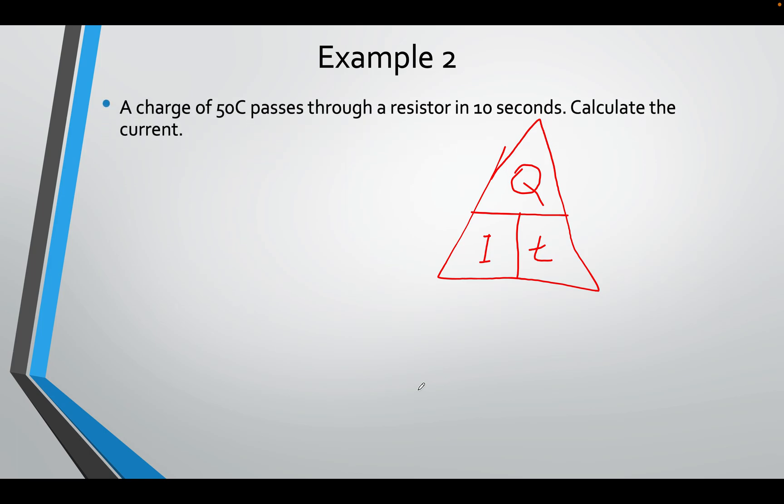Similarly, you can do the same thing if you want to find the current. We have Q, which is 50, we have T, which is 10. And we know that I is Q over T. So you will do that, put the numbers in, 50 over 10, 5 amps.